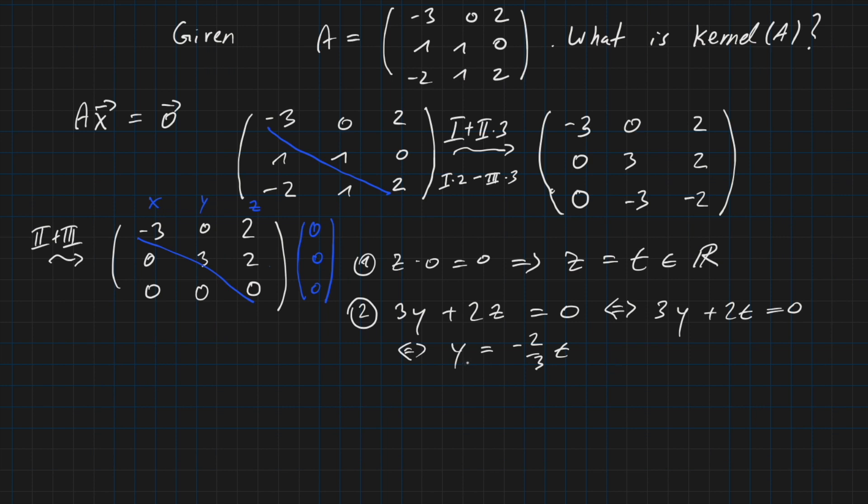Again, we achieved our goal here. Y is expressed with numbers and fixed parameters. And we would like to do the same for x as well. And the first row gives us minus three x plus zero y plus two z is zero. So this cancels out to zero. So we have minus three x plus two z equals zero. And we know that z is t. So we have minus three x plus two t equals zero. And this can be reformulated to x equals two over three t. So we can write down our solution.